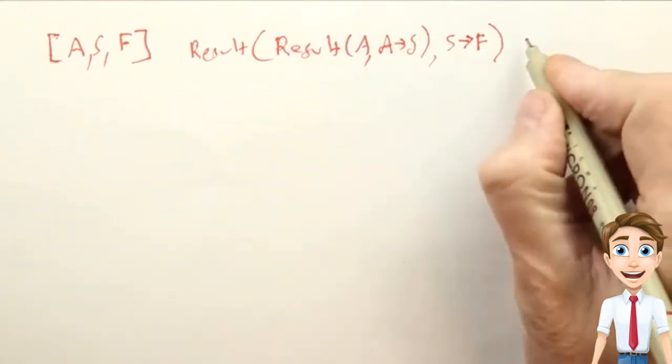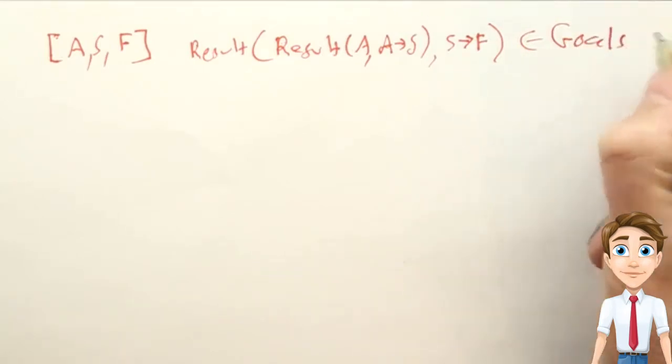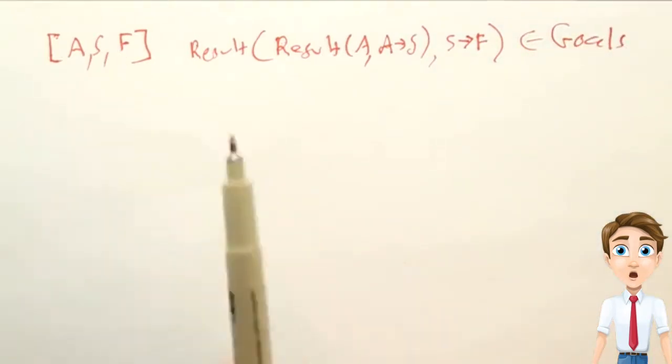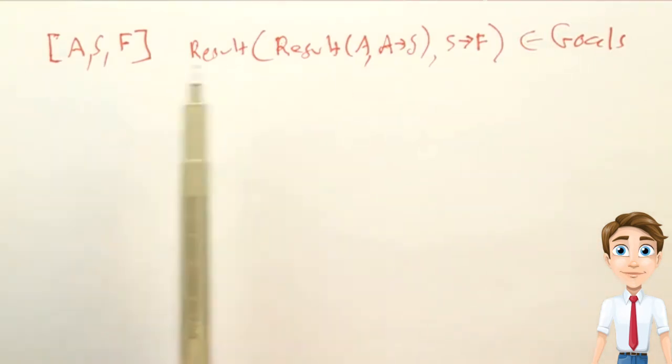And then we applied to that the result of starting in that intermediate state and applying the action of going from S to F. And if that resulting state is an element of the set of goals, then this plan is valid. This plan gives us a solution. And so that's a mathematical formulation of what it means for this plan to be a goal.